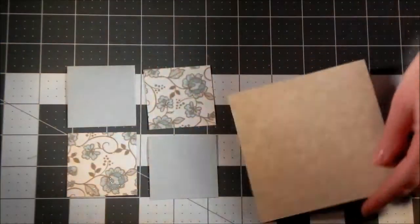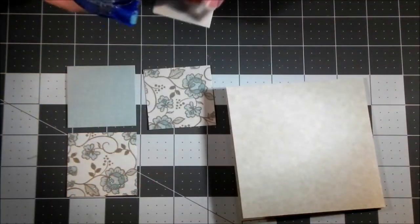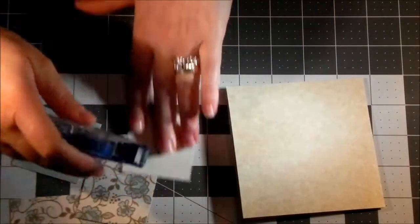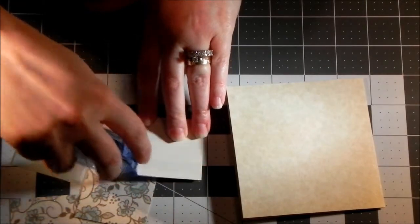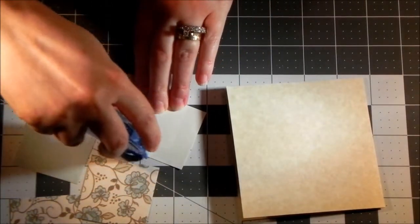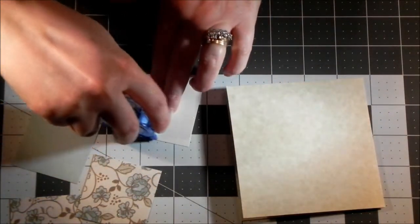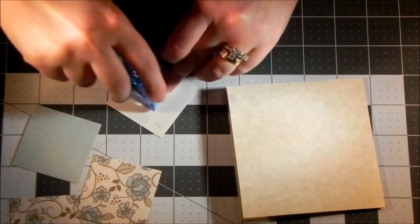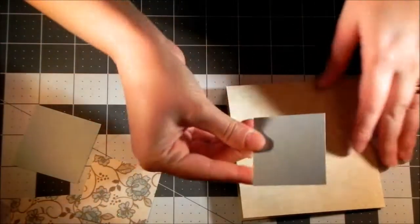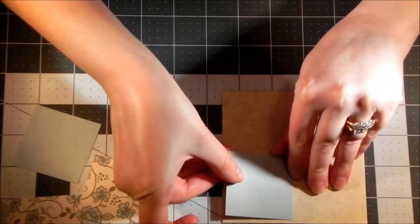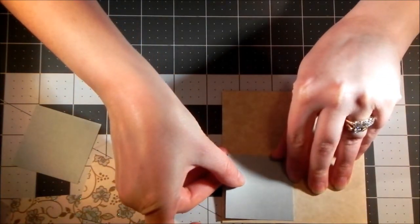This card is very easy to make. All you'll do is put a tape runner on the back of each of the four pieces of two inch squares and simply align it nicely on your card.